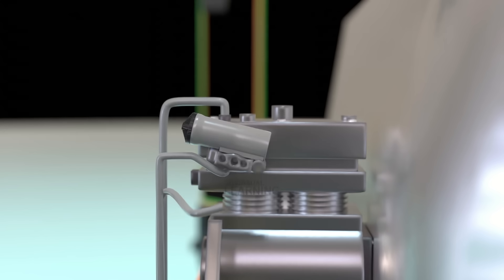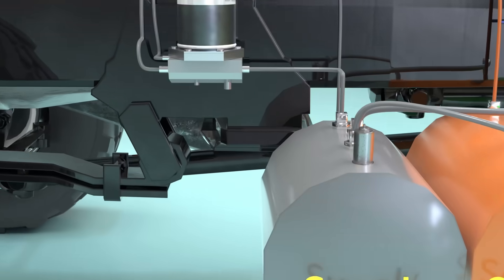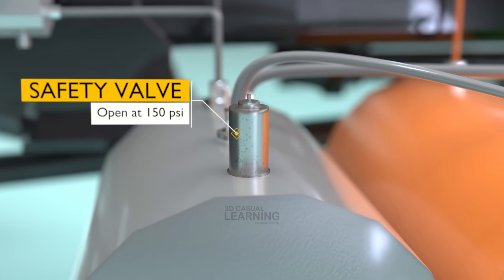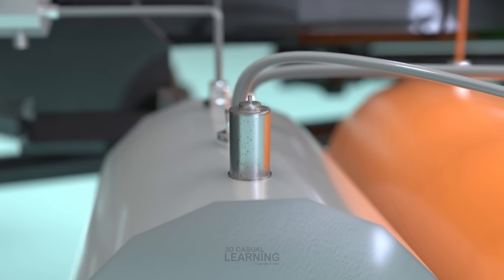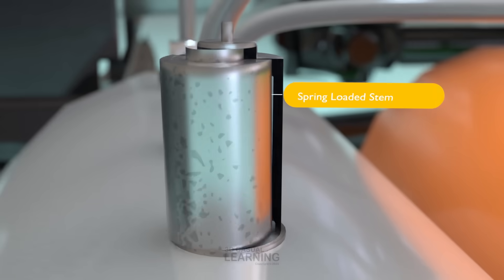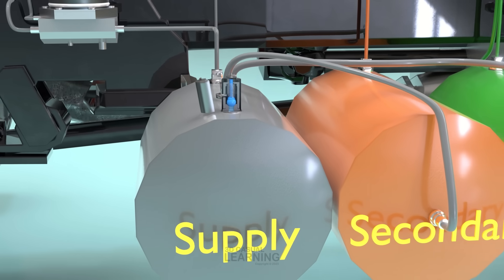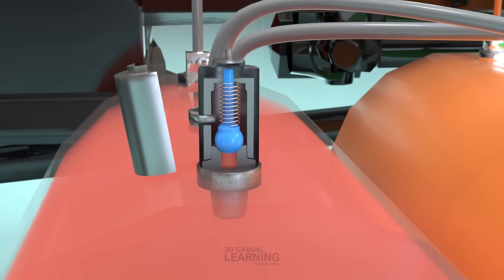To safeguard the air system in the event of a failure, in either the governor or the compressor unloader mechanism, a safety valve is installed on the supply reservoir. This valve is usually set to open at 150 psi. It operates using a spring-loaded stem that presses against a seated ball valve. When the pressure in the reservoir exceeds the set limit of 150 psi, the pressure forces the ball off its seat, allowing excess air to escape through the exhaust port.